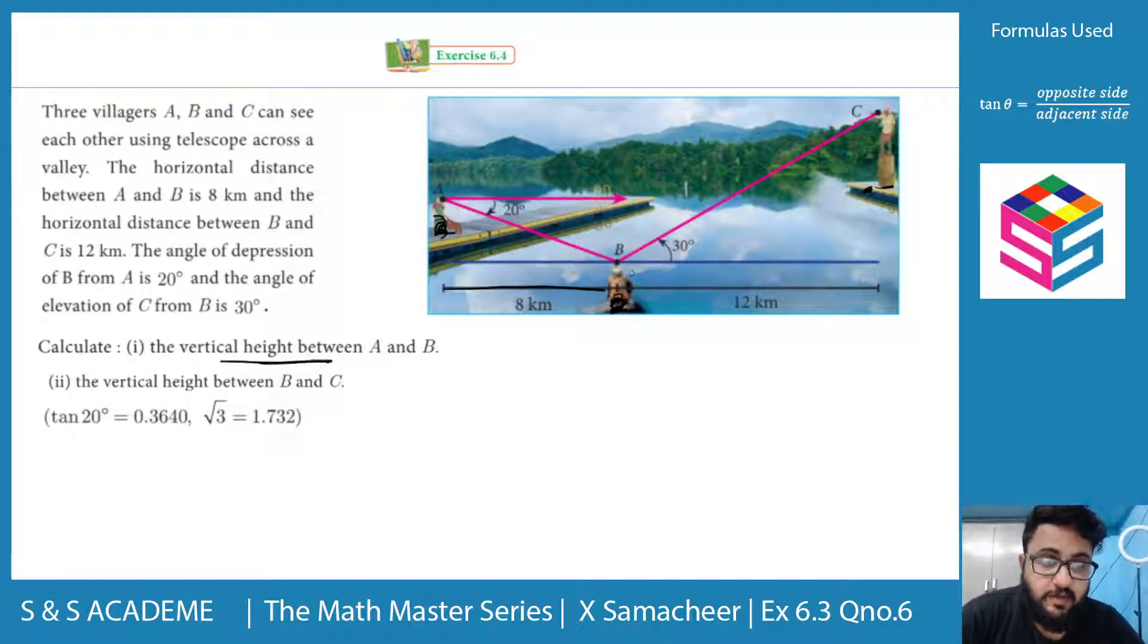We have to find the vertical height between A and B. This is the vertical height between A and B. Next is the vertical height between B and C. It is very straightforward and simple. This is the vertical height between A and B.